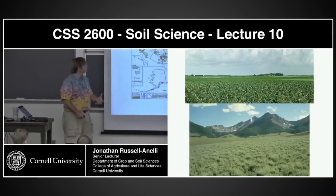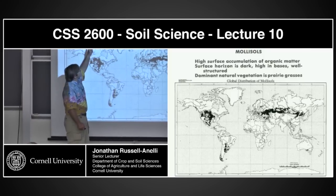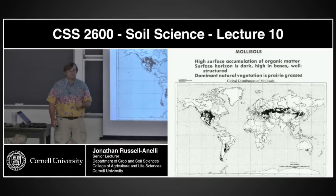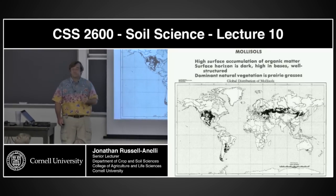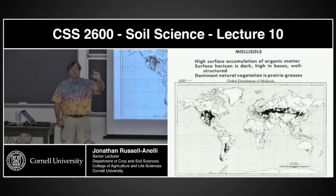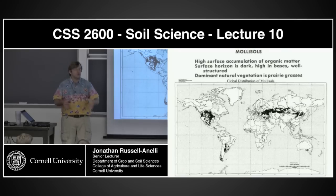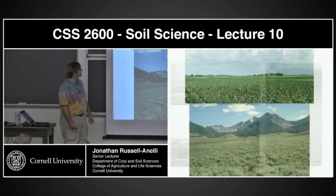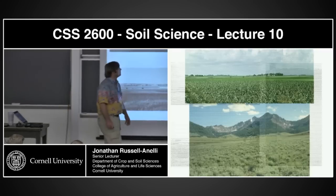If we think about these grasslands and the high surface accumulations of organic matter, where is that organic matter coming from? The grasses. Around here when we have leaf fall, all the organic matter is dropped right at the surface. But with grasses, yes the tops are dying, but the roots themselves are also shunting off pieces of root every year. As a result, these horizons get really deep.